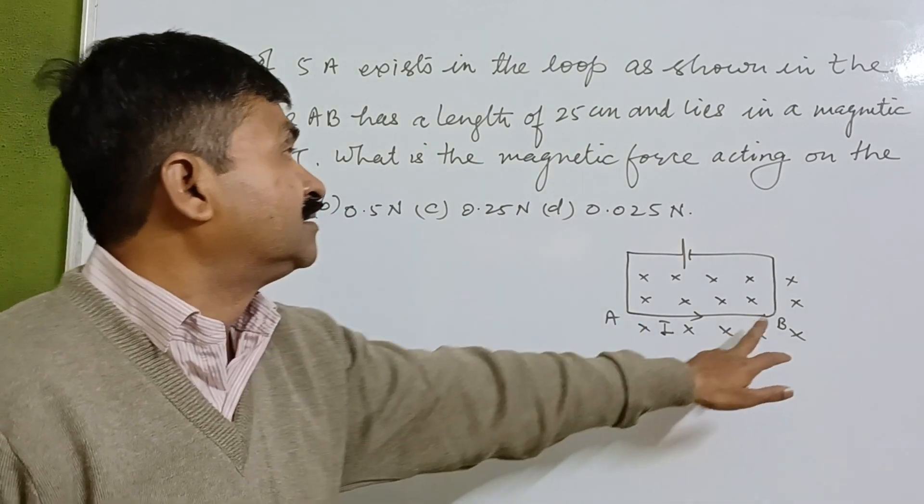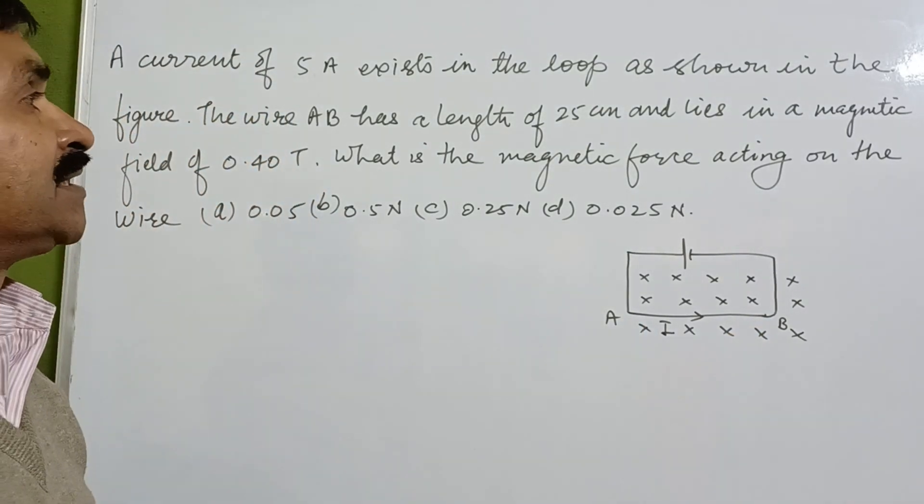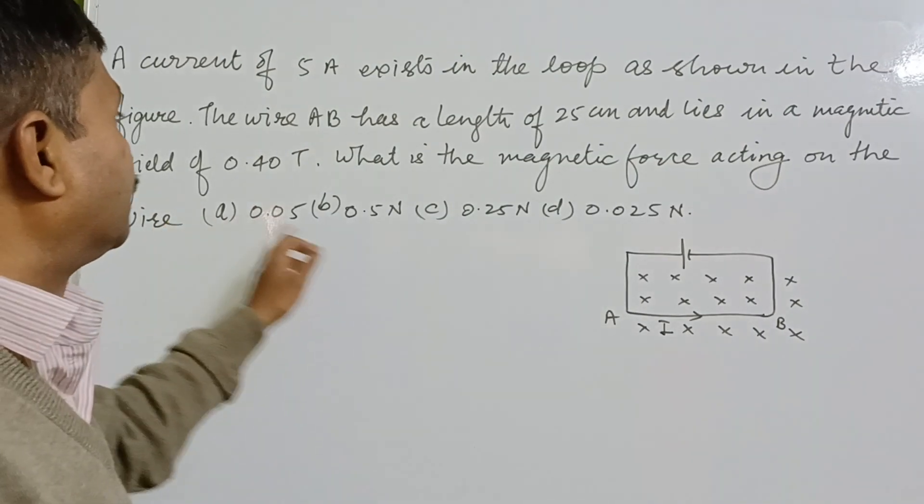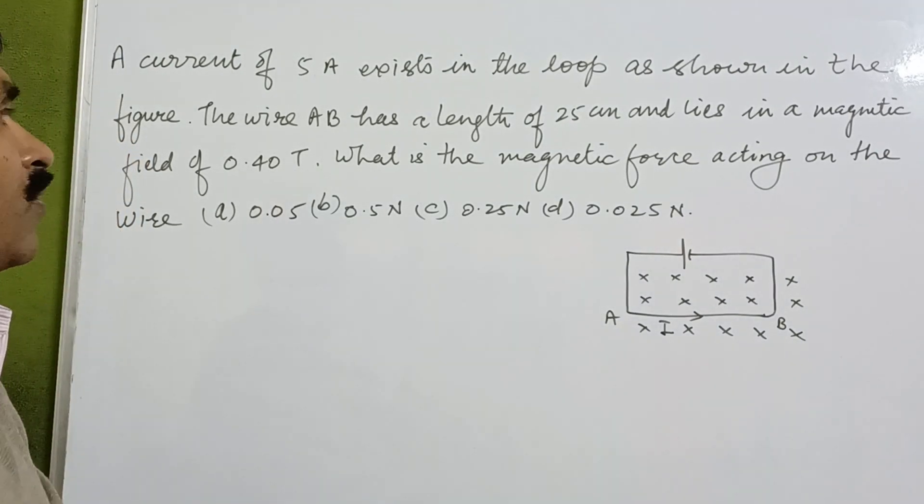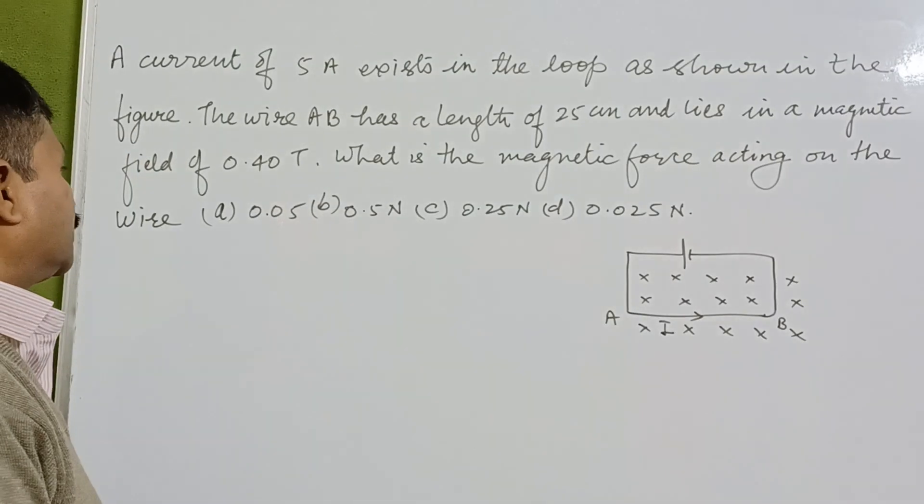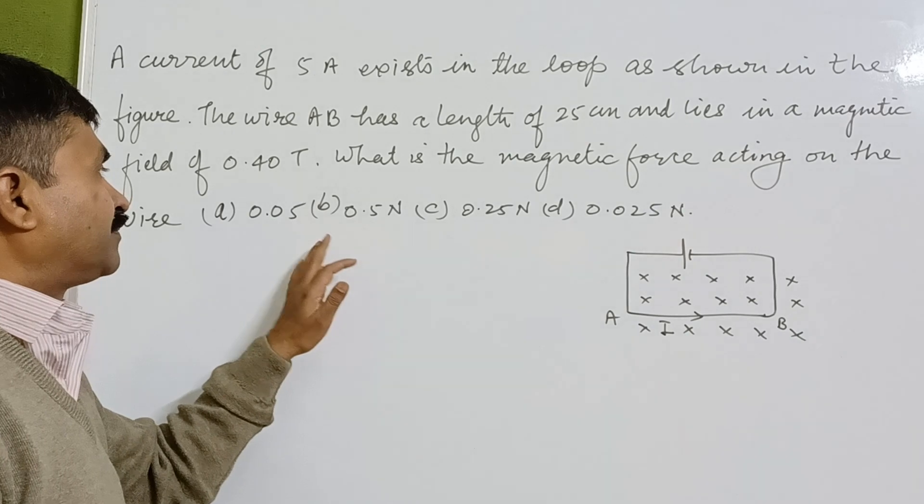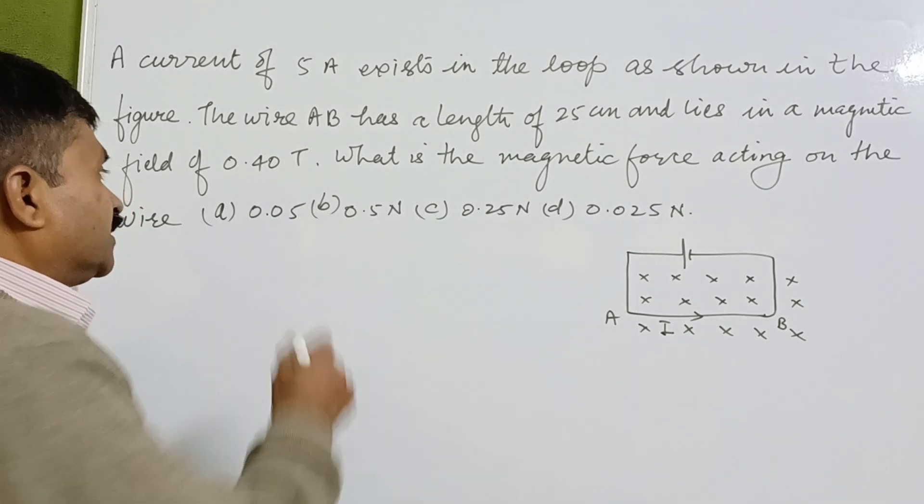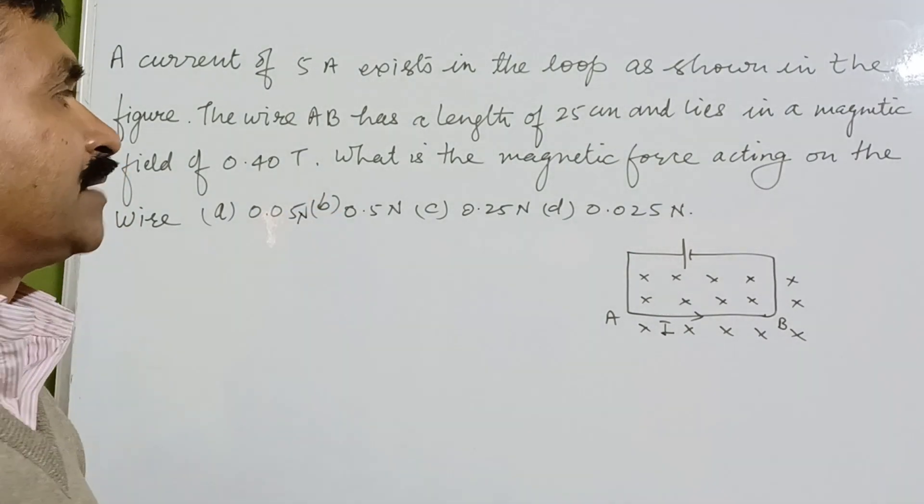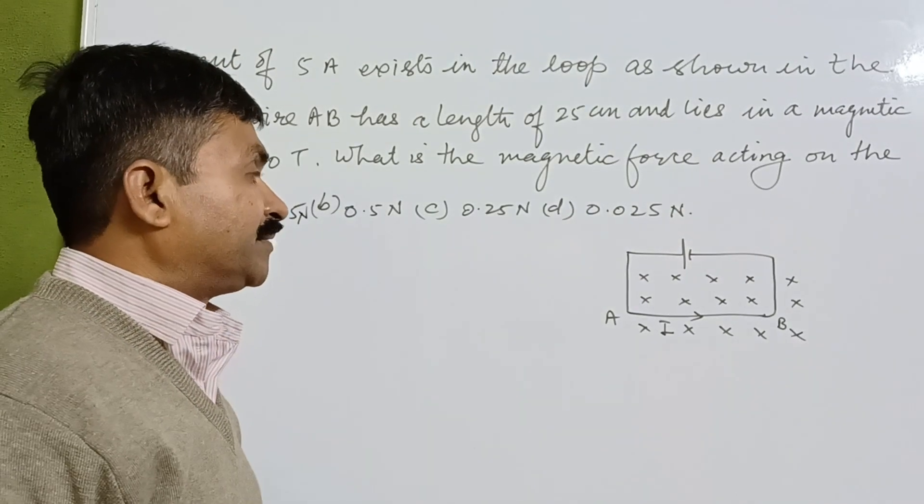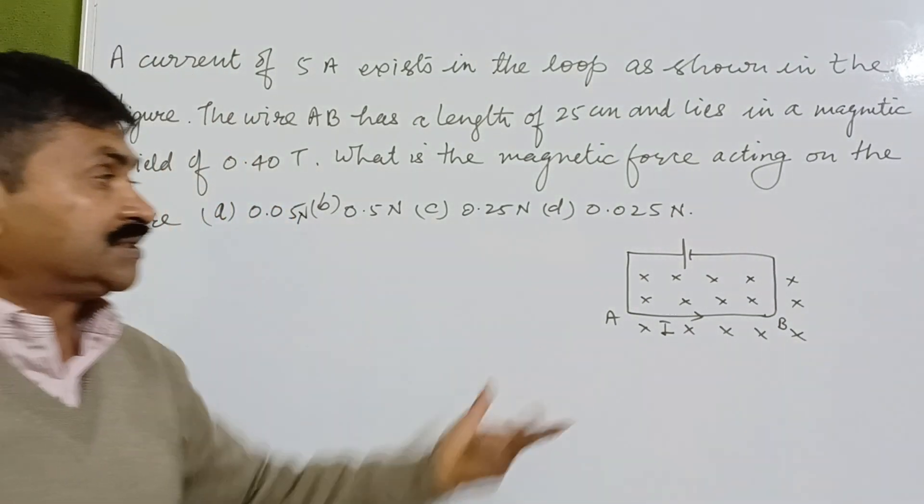AD has a length of 25 centimeters and lies in a magnetic field of 0.40 tesla. What is the magnetic force acting on the wire? The options are: (a) 0.05 newton (b) 0.5 newton (c) 0.25 newton (d) 0.025 newton.